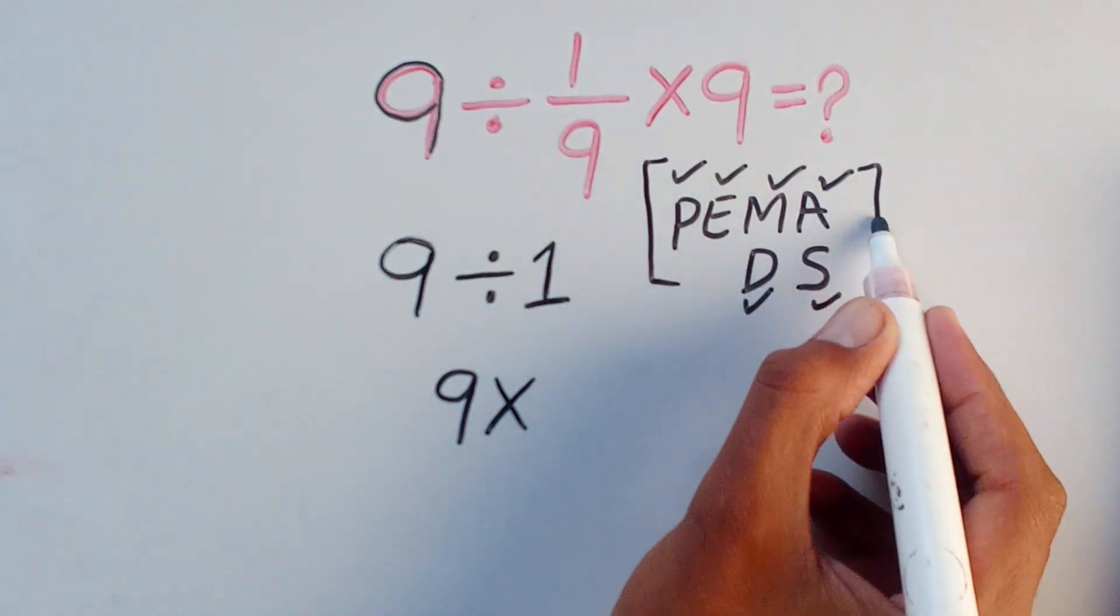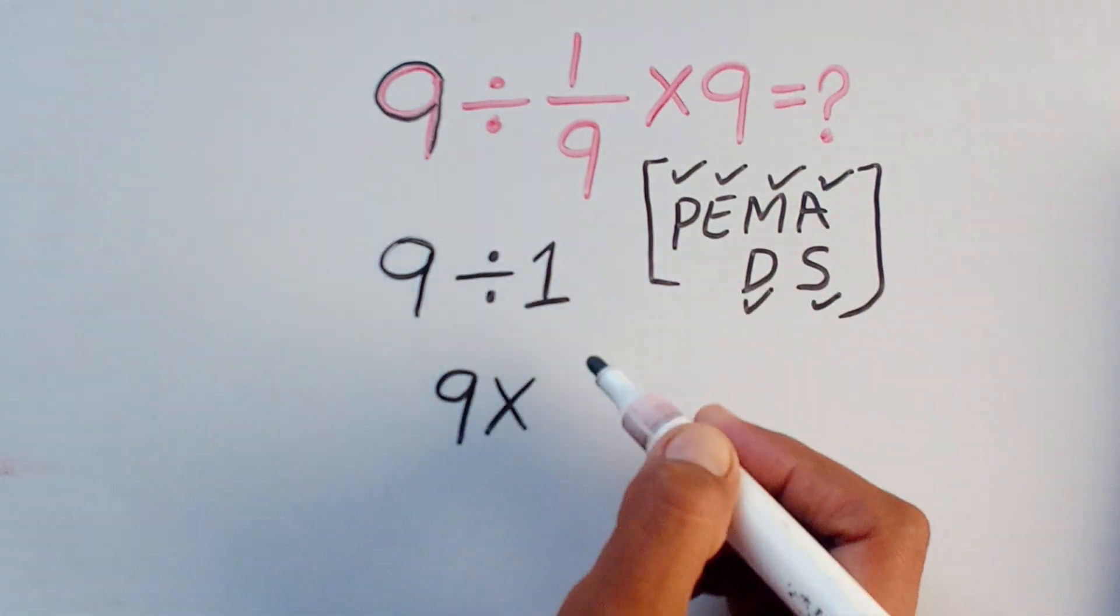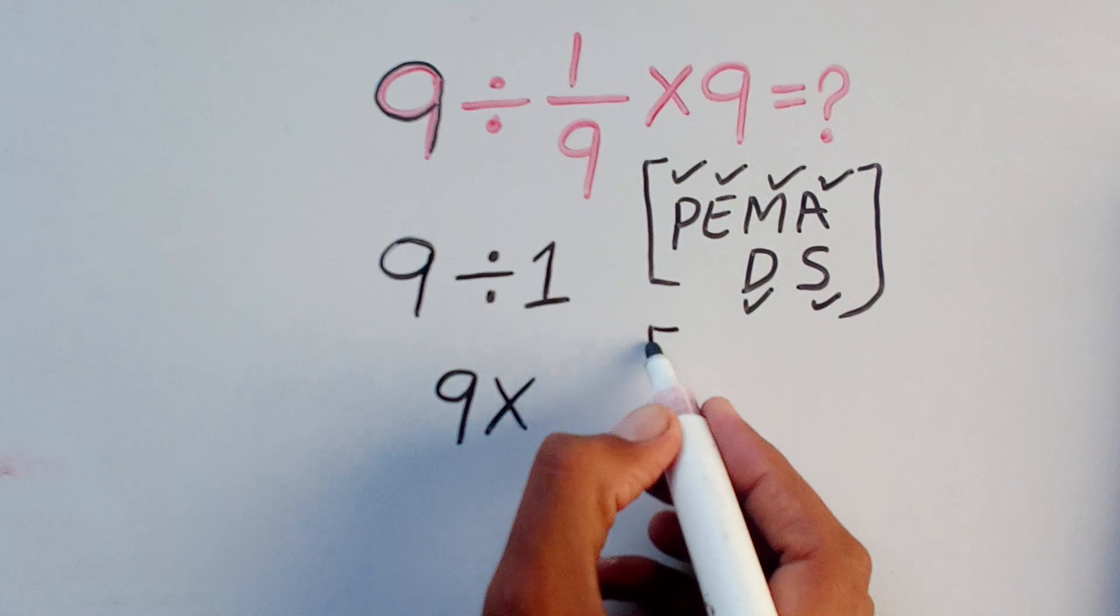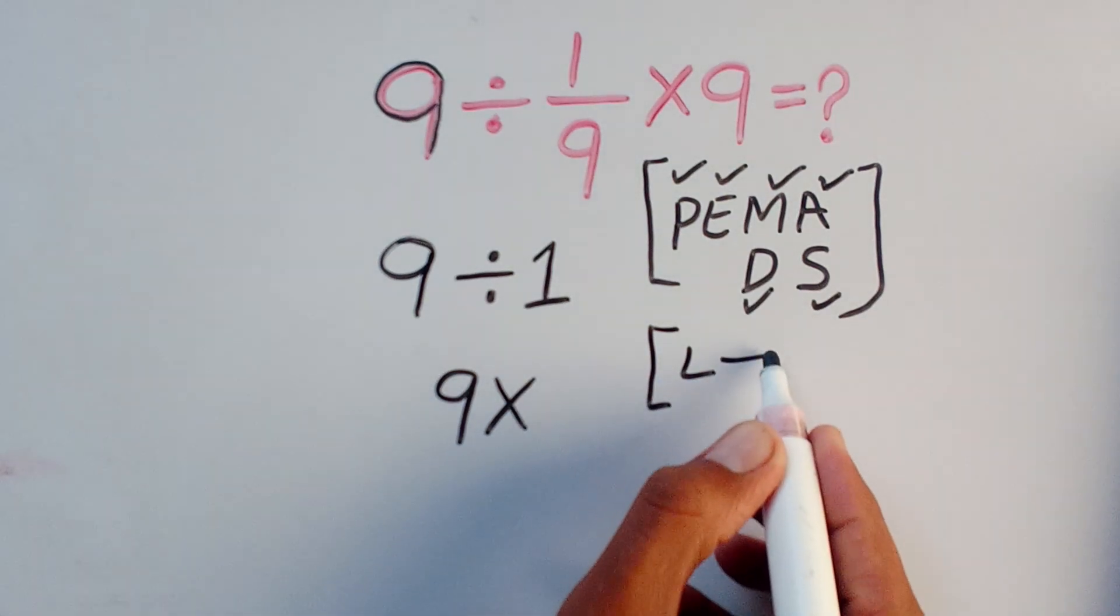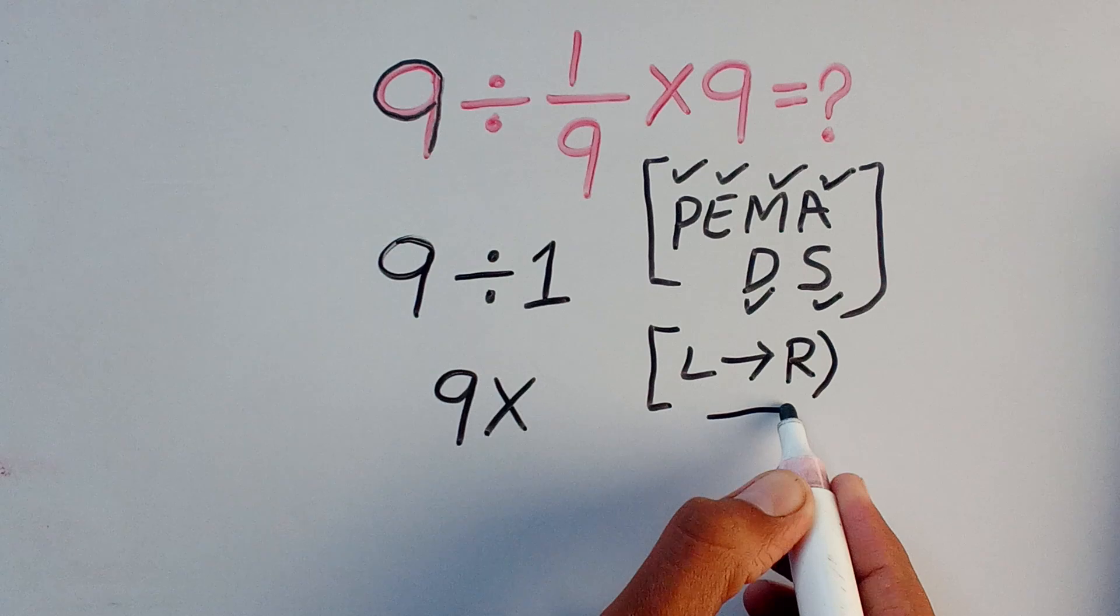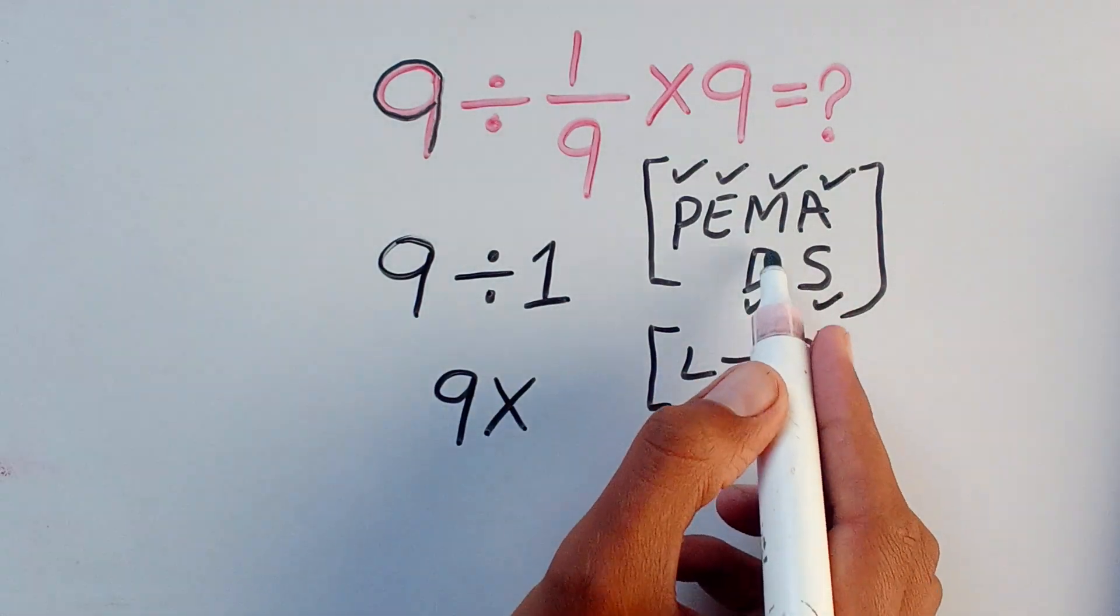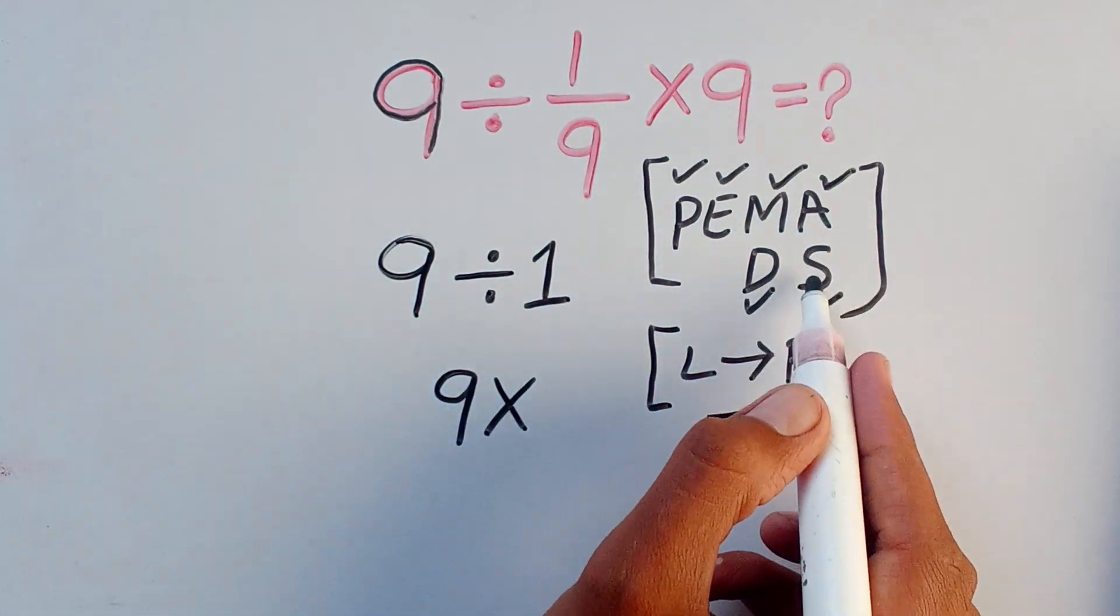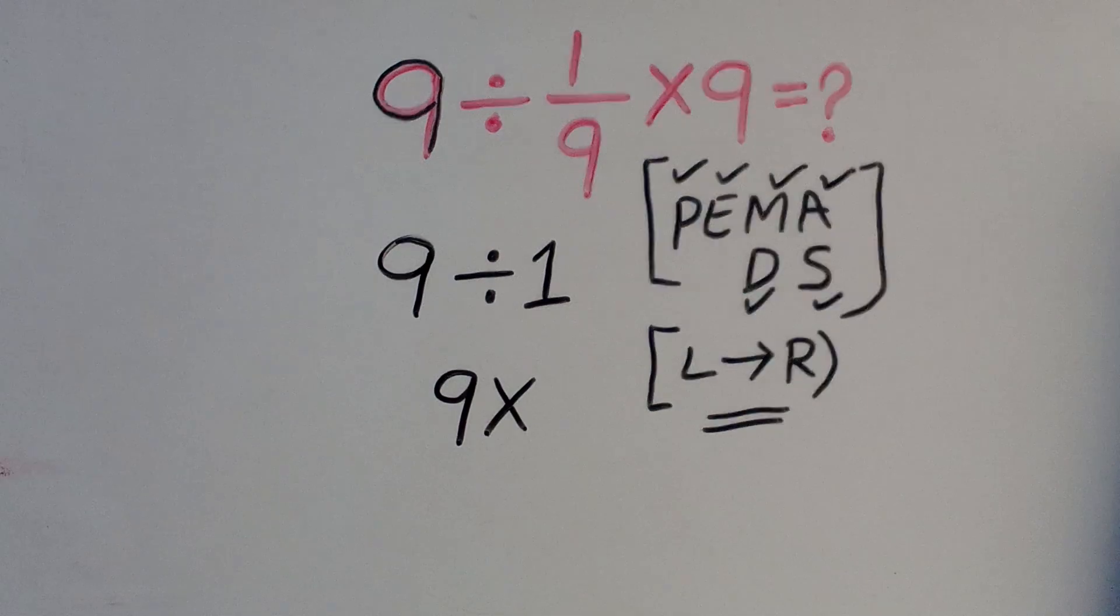Without PEMDAS, you cannot solve this type of math problem. So, multiplication and division have equal priority and we can solve it from left to right. And multiplication and division have higher priority than addition and subtraction.